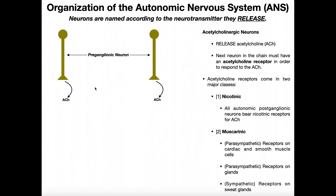We'll talk about what are called acetylcholinergic neurons. A neuron is named according to the neurotransmitter that it releases. Here I've got preganglionic neurons releasing acetylcholine, so if these neurons are releasing acetylcholine, they are termed acetylcholinergic neurons — and sometimes we'll just shorten that to cholinergic. Cholinergic and acetylcholinergic mean the same thing. Neurons are named according to the neurotransmitter that they release. Regardless of whether it's the sympathetic or parasympathetic nervous system, all preganglionic neurons are going to release acetylcholine.